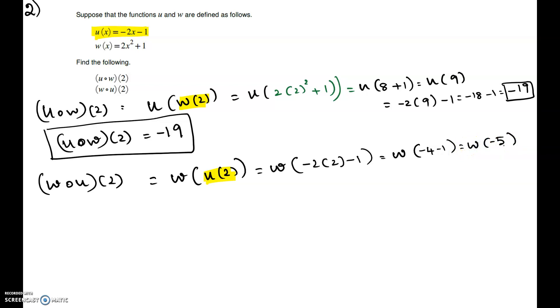In order to do w at negative 5, we have to go to this function w of x and change the x there with the negative 5. So, it is 2 times negative 5 squared plus 1, or 2 times 25 plus 1, that's 50 plus 1, which is 51. That is, w composite u at 2.